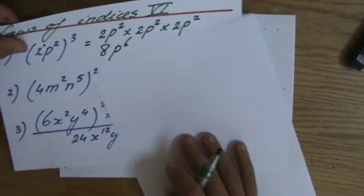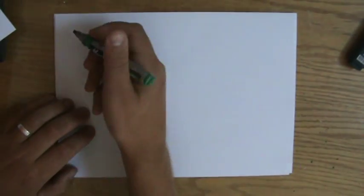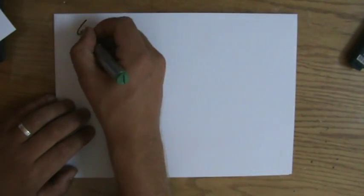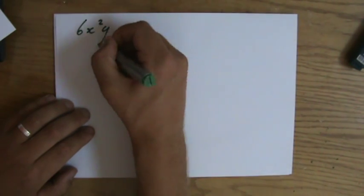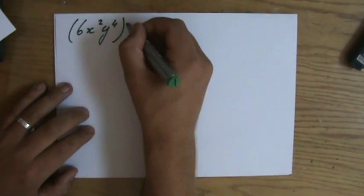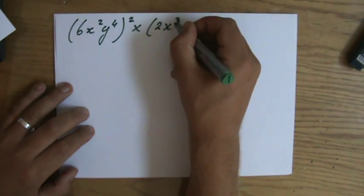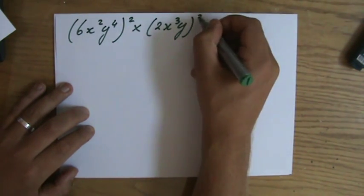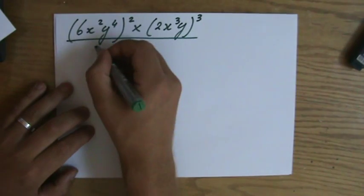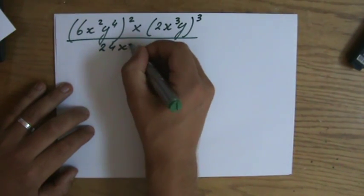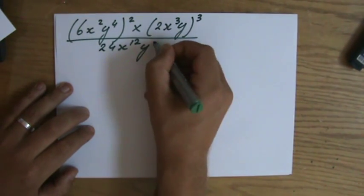So I'm going to rewrite that question here. So we have, you can do the whole question on one page. 6x to the power of 2, y to the power of 4, to the power of 2, times 2x to the power of 3, y to the power of 3, all of that divided by 24x to the power of 12, y to the power of 5.